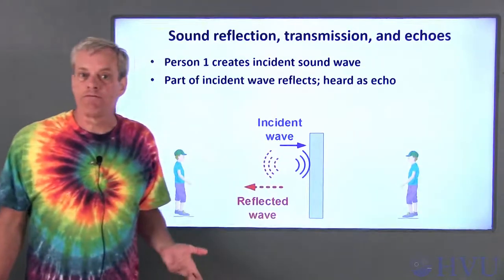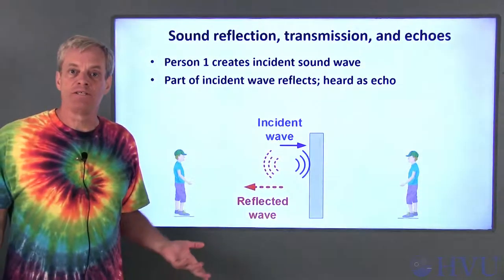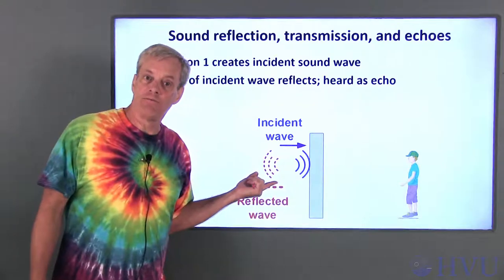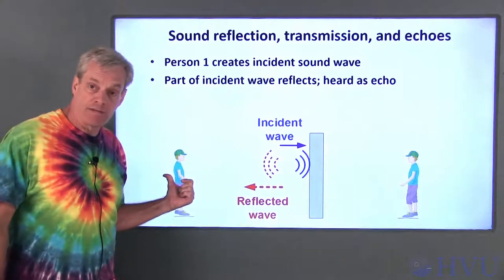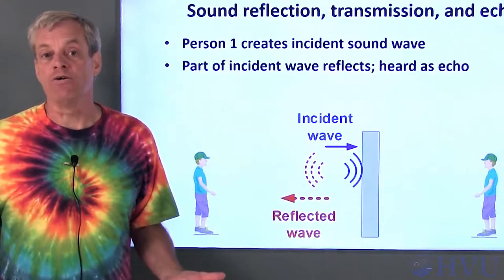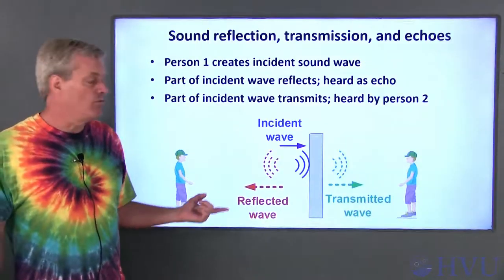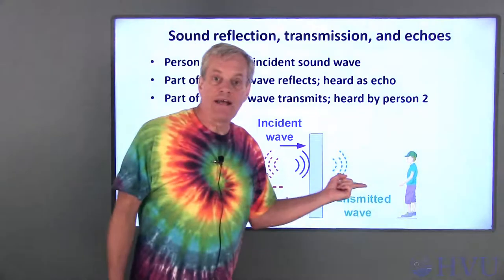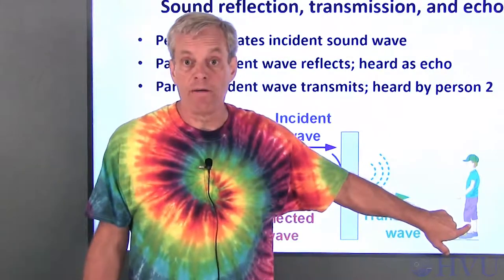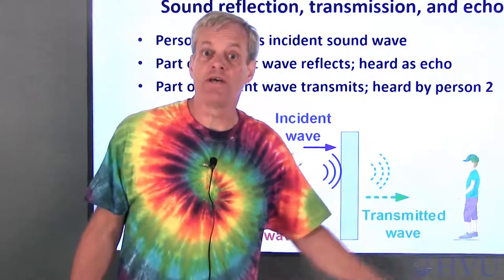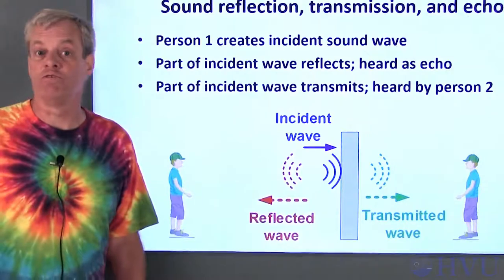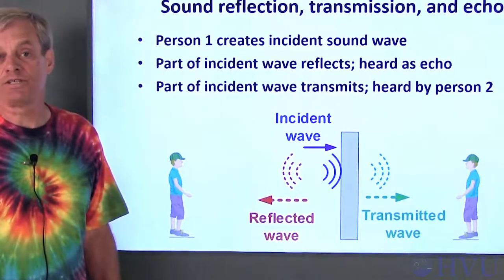Due to the difference in the properties of the air and the wall, sound will reflect from the wall and back to person one. This is heard as an echo. Part of the incident wave will also transmit through the wall, and this will be heard by person two as a somewhat distorted and muffled version of the original sound.